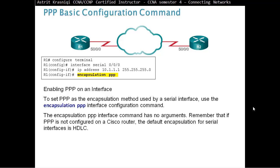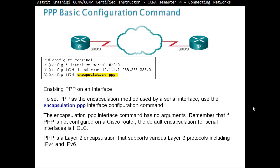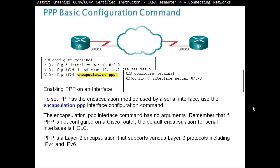Use the encapsulation PPP interface configuration command. The encapsulation PPP interface command has no arguments. Remember that if PPP is not configured on a Cisco router, the default is HDLC. Point-to-Point Protocol is a Layer 2 encapsulation that supports various Layer 3 protocols including IPv4 and IPv6. Be sure to configure the other side as well — both sides have to match, so both sides use encapsulation PPP.